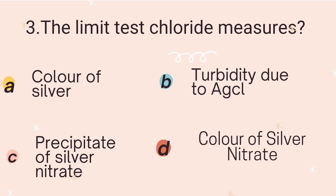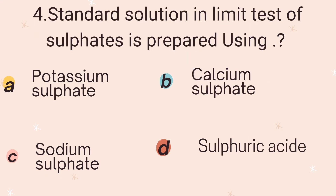Fourth question: The standard solution in the limit test of sulfates is prepared using which compound? Option A is potassium sulfate, Option B is calcium sulfate, Option C is sodium sulfate, and Option D is sulfuric acid. The correct answer is potassium sulfate. Potassium sulfate is used to prepare the standard solution for the sulfate limit test, and ethanol solution can also be added.